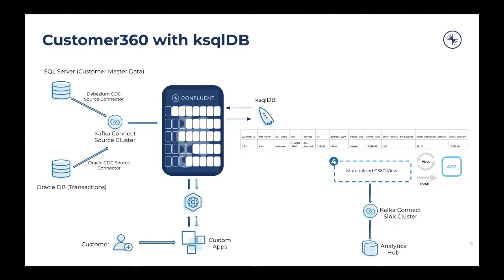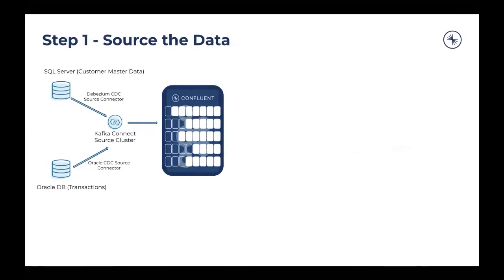Let's step through the whole process of how to build this system. Step one is sourcing the data. We're going to use a couple of connectors from the Confluent platform and the Confluent Hub ecosystem. We'll use Debezium's CDC source connector for SQL Server and the Oracle CDC source connector to get data in real time as it's captured on the source side. Every time there's an insert, update, or delete on the source tables, it gets reflected and captured in your Kafka topic.